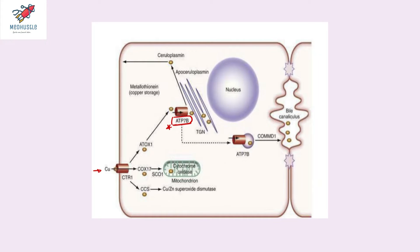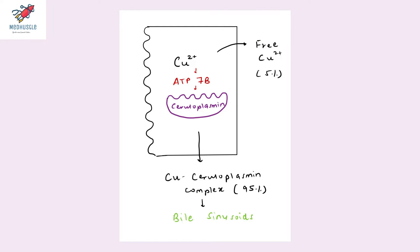Once inside the hepatocytes, this copper, with the help of the gene ATP7B, is incorporated with apoceruloplasmin to form the bound copper ceruloplasmin complex. This copper ceruloplasmin complex comes out of the hepatocytes and is excreted into the biliary sinusoids. The total serum copper consists of 95% bound copper ceruloplasmin complex, while the free copper is only 5%.